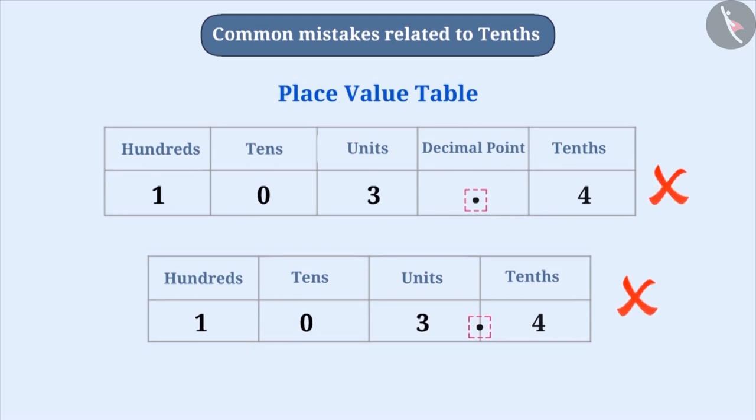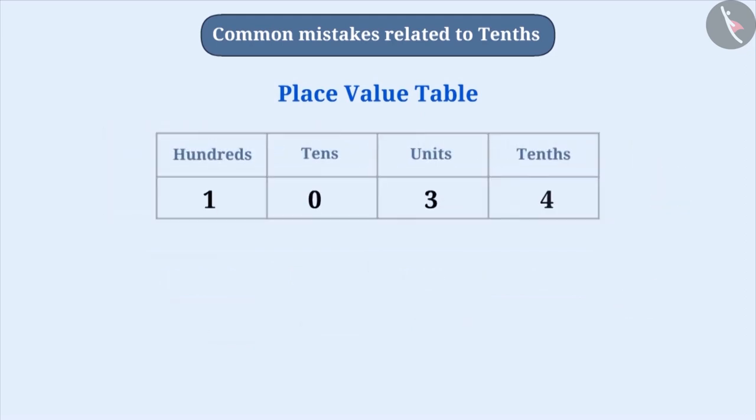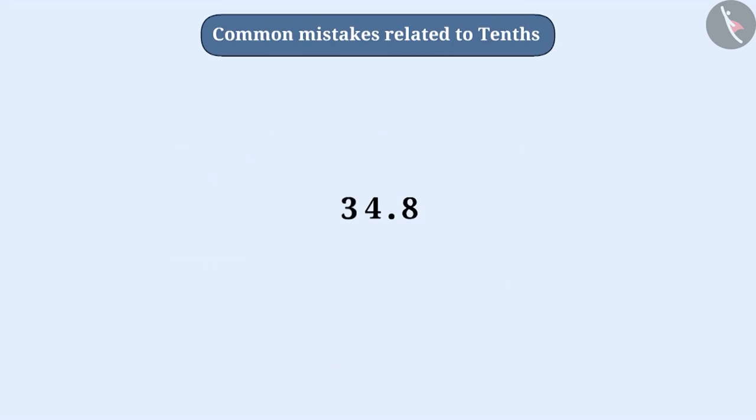We represent numbers in their position in the place value table because the value of digits in a number depends on its position. For example, in 103.4, 4 is at the tenths place. So its value is 0.4. But in the place value table, we represent it only as the digit 4. Here, we don't represent the decimal point.